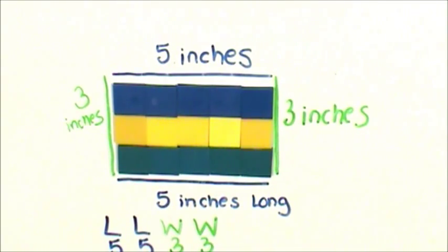To find the perimeter of the rectangle, I'm going to join the lengths and widths. 5 plus 5 plus 3 plus 3 equals 16.